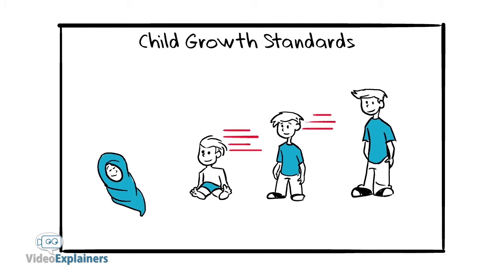Children are defined as stunted if their height for age is more than two standard deviations below the World Health Organization child growth standards median.